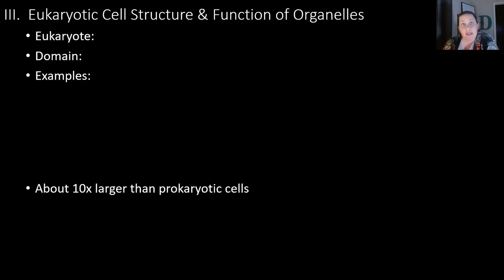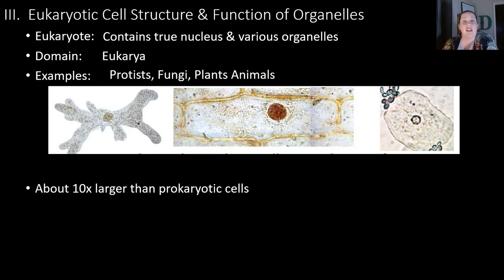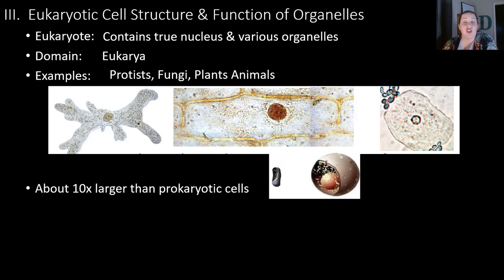Now let's switch gears and look at the more complicated type of cell — the eukaryotic cells. Eukaryotic cells are in the domain eukarya. They are eukaryotes because they contain a true nucleus — 'eu' means true and 'karyo' means nucleus. They also have lots of various organelles that are present. Organelles mean tiny organs — little structures that do particular jobs, just like organs in your body do particular jobs. Some examples are protists, fungi, plants, and animals — the four kingdoms in domain eukarya. These cells are about 10 times larger than most prokaryotic cells and are more complex.